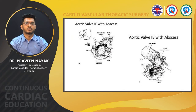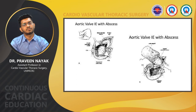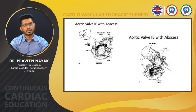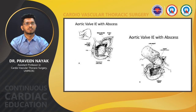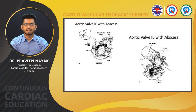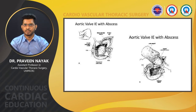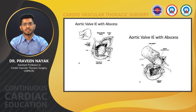In aortic valve abscess, the abscess at the described site should be completely drained. The native or neighboring infected or destroyed tissue should be totally excised, followed by prosthetic valve replacement. Generally, a homograft is usually used.